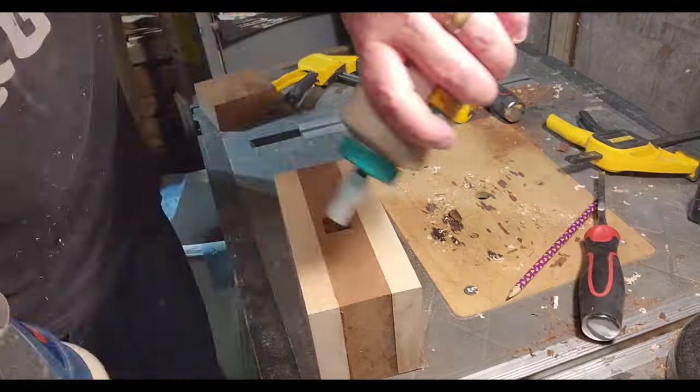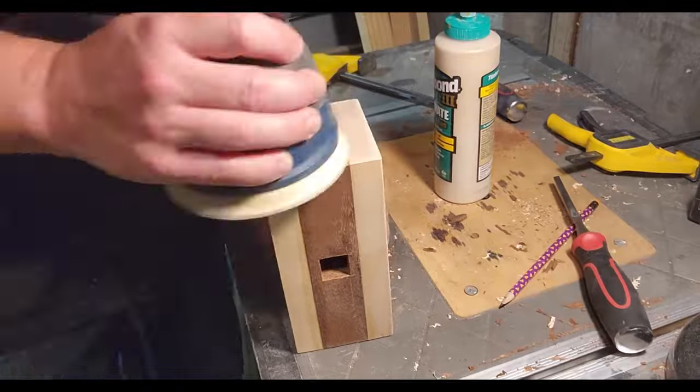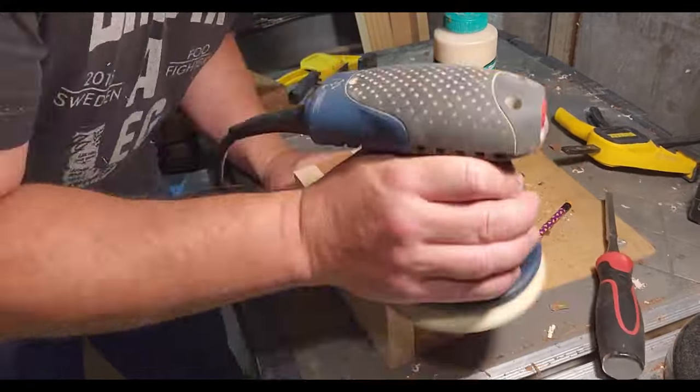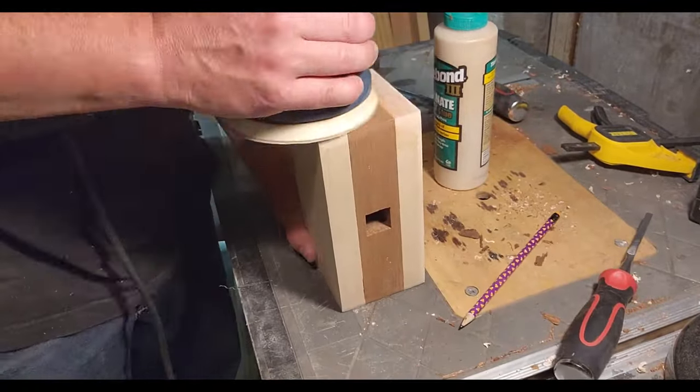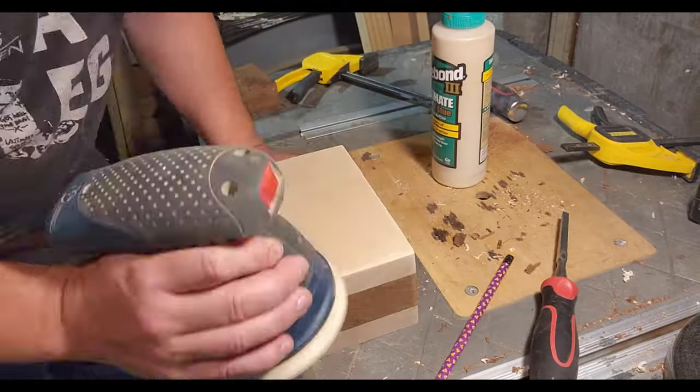And then everyone's favorite, sanding. I only went to 120 grit. Mallets are for hitting stuff, so it seems pretty pointless to make any of the surfaces silky smooth.